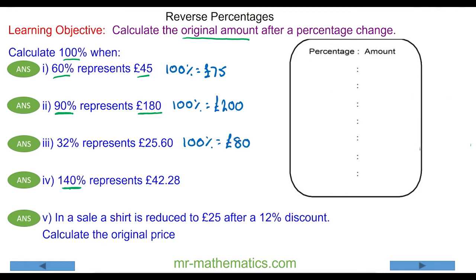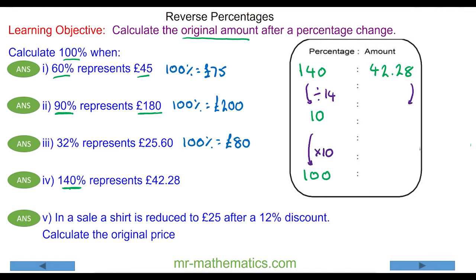For question four, 140% represents £42.28. 10 is a factor of both 140 and 100, so we work out the value of 10% by dividing by 14, and then find 100% by multiplying by 10. So 42.28 divided by 14 and then multiplied by 10 — 10% is £3.02, and 100% is £30.20. So the original amount is £30.20.